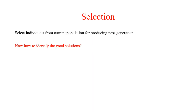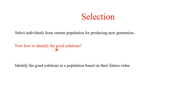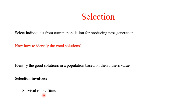How can individuals from a current population be selected? For that, we have to identify good solutions. Individuals from the population are selected according to their fitness value. Fitness evaluation gives the goodness of each individual in the population. Selection involves survival of the fittest — those individuals having the highest fitness values are selected for generating offspring.